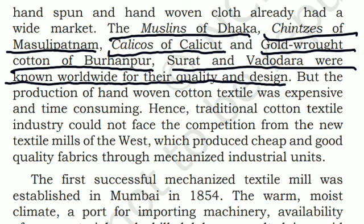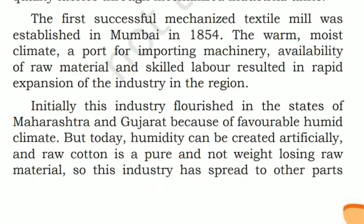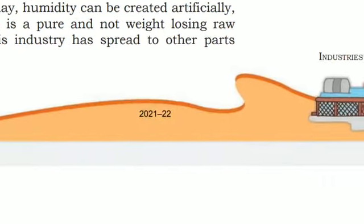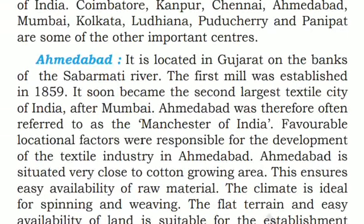The first successful mechanized textile mill was established in Mumbai in 1854. The warm, moist climate, a port for importing machinery, availability of raw materials, and skilled labor resulted in rapid expansion of the industry in the region. Initially, this industry flourished in the states of Maharashtra and Gujarat because of favorable humid climate. But today, humidity can be created artificially and raw cotton is a pure and not weight-losing raw material, so this industry has spread to other parts of India.